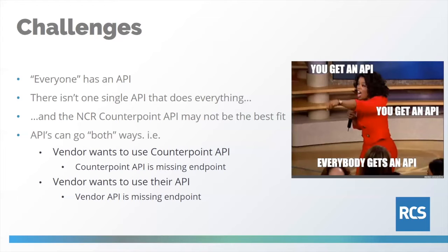There is no one single API that does everything. The CounterPoint API might not always be the best fit. It does excel at inventory, creating customers, and creating tickets and orders for an e-commerce shopping cart — that's a really good solution. Where it lacks is some of the back-office functionality, like transfers, adjustments, or receivers. That's at least somewhere on NCR's roadmap. So it could be 99% there, but you might be missing one connection point that is key to your business.